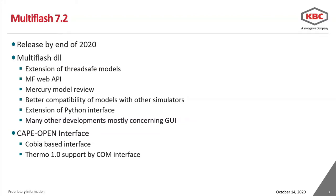The latest release of Motiflash is version 7.2, which will be released by the end of this year. There have been many new features on the Motiflash DLL side: the extension of thread-safe models, so now almost all calculations and models in Motiflash are thread-safe. We have been working on a Motiflash Web API, and the Mercury model has been reviewed and improved. We now have better compatibility of models with other simulators, the partner interface has been extended, and many other developments mostly concerning the graphical user interface. On the CAPE-OPEN interface side, we have developed a COBIA-based interface and we have TERMO 1 support via the COM interface.